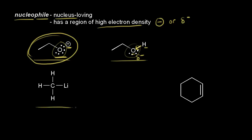Next let's look at methyl lithium. Let's think about the electronegativity difference between carbon and lithium. Carbon is more electronegative than lithium, so the two electrons in this bond are pulled closer to the carbon, giving the carbon a partial negative charge. So the carbon is the nucleophilic center of methyl lithium. Since lithium is losing some electron density, we could draw a partial positive charge on lithium. Here I've drawn it as a covalent bond, but really you could also show it as being an ionic bond.